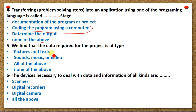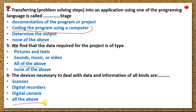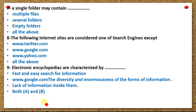Five — the data required for the project is of type: pictures and texts, sounds/music or video, all of the above, or none of the above. Six — the devices necessary to deal with data and information of all kinds are: scanner, digital recorders, digital camera, or all of the above. Seven — a single folder may contain: multiple files, several folders, empty folders, or all of the above.